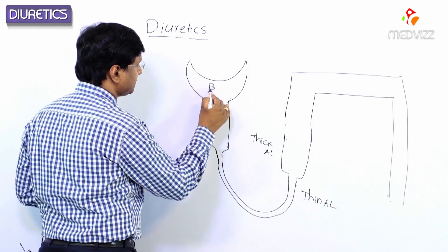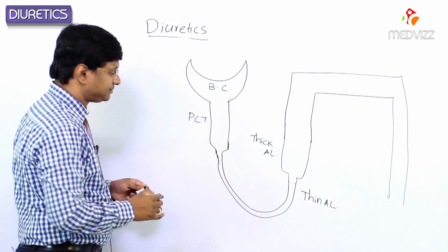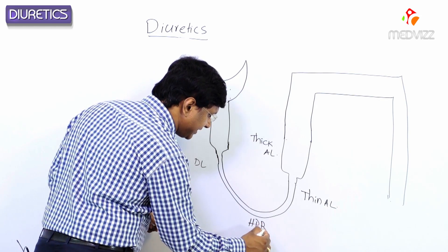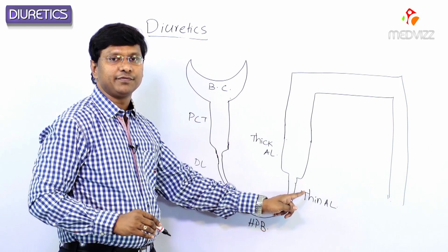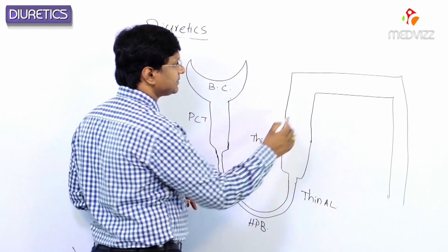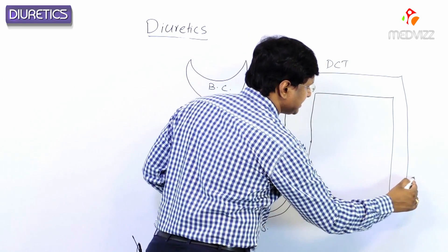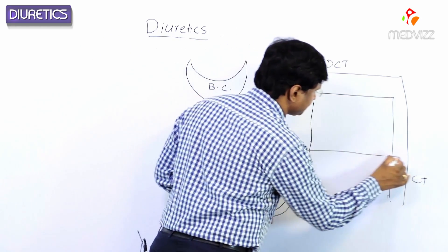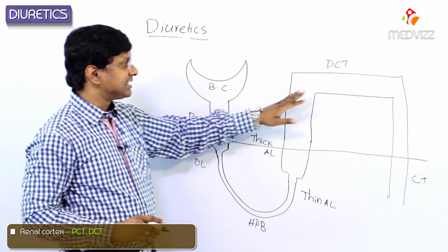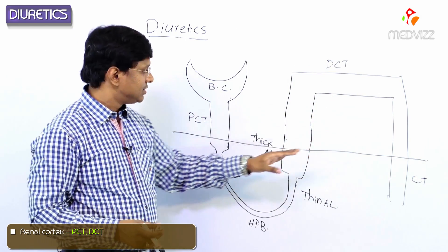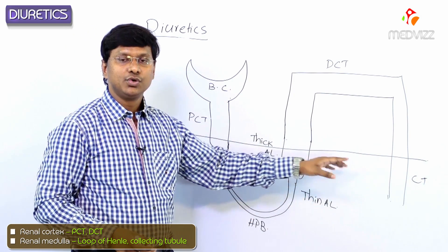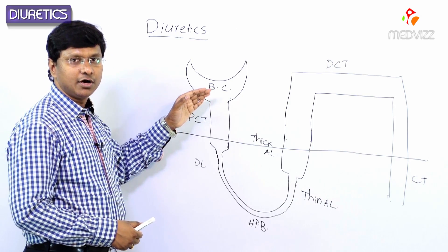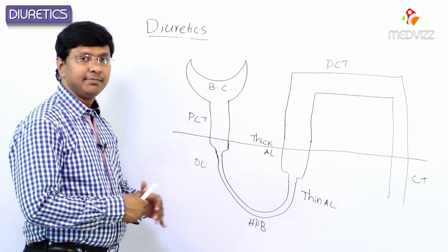So to recap: this is the Bowman's capsule, this is the proximal convoluted tubule, this is the descending limb of the loop of Henle, then the hairpin bend, then the thin ascending limb, thick ascending limb, the distal convoluted tubule, and the collecting duct. The PCT and distal convoluted tubule are part of the cortex, whereas the loop of Henle and collecting tubules are part of the medulla.